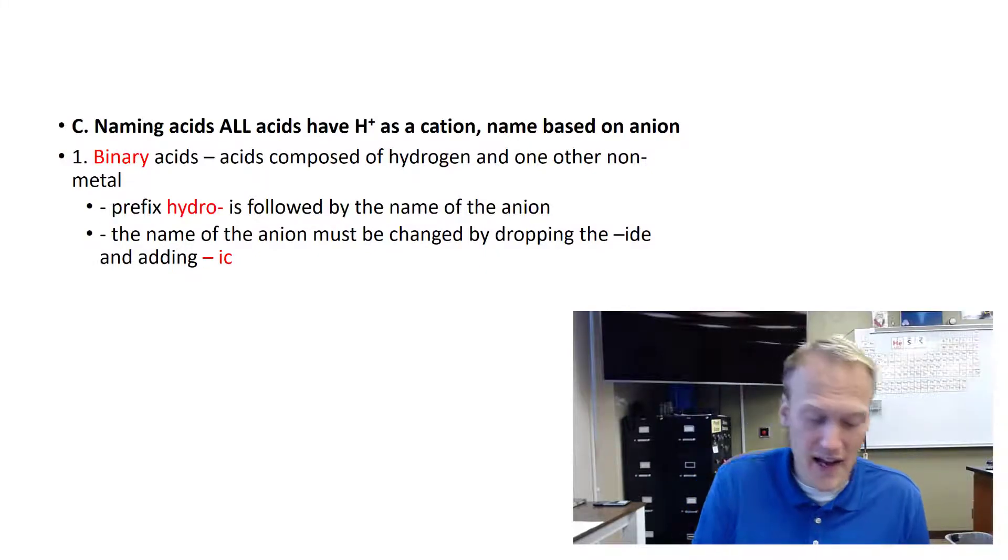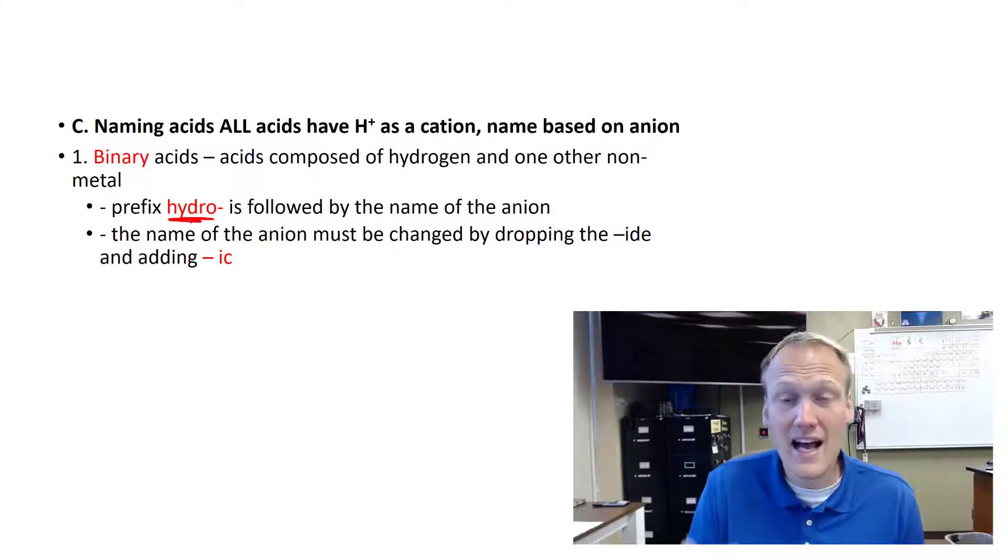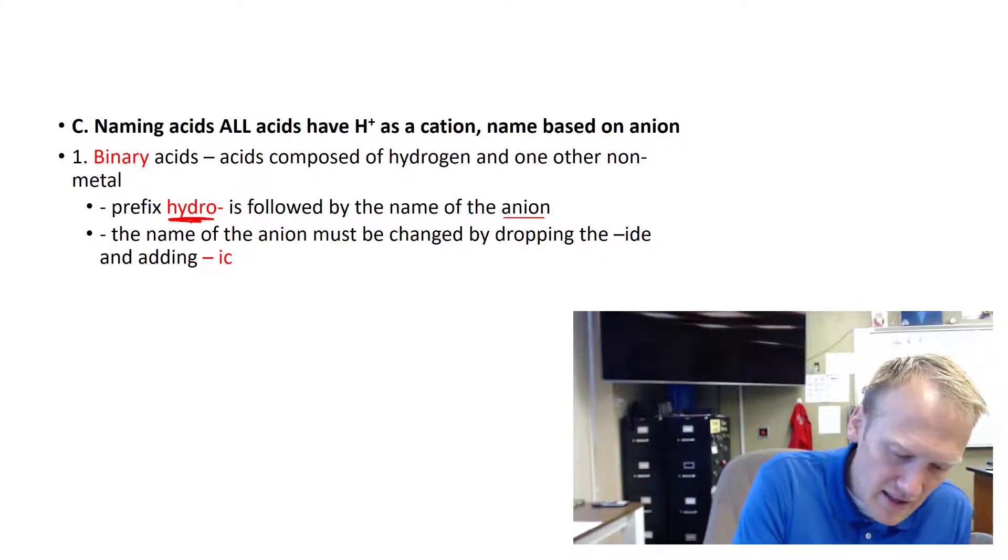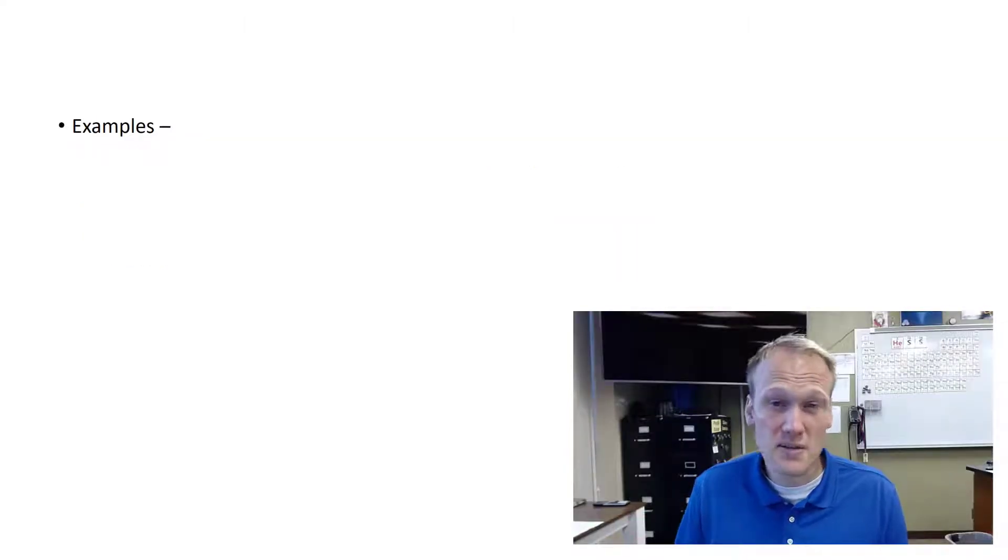The way we name these binary acids is we put the prefix hydro before the name of the anion. Then we name the anion and we change the IDE ending to IC. So this becomes pretty simple.